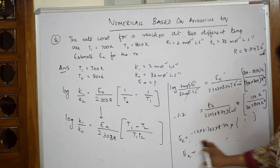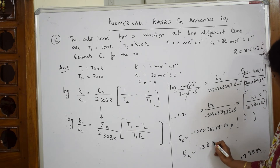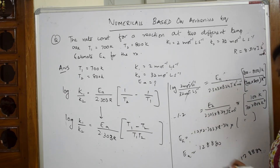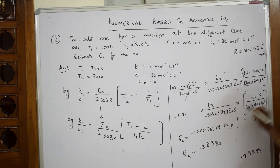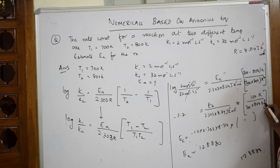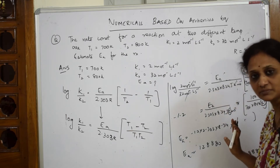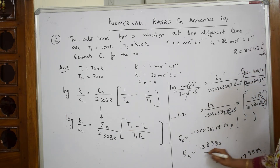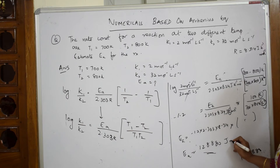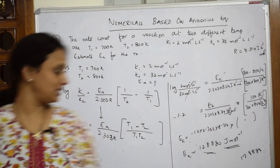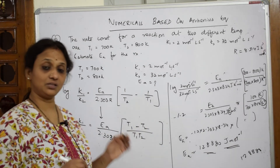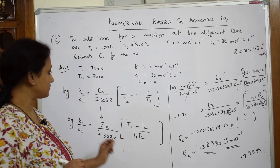After solving, you get an answer of 1, 2, 8, 8, 8, 0 — approximately 128880. Now observe the units carefully: the Kelvin units cancel. What you are left with is the answer in Joule mol inverse. That is your final answer.